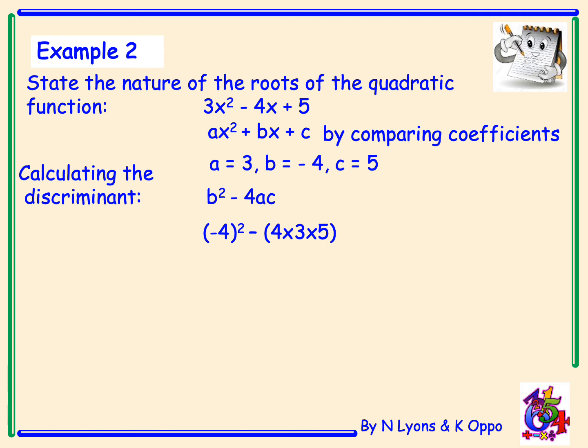Put your brackets in and write minus 4 squared, minus brackets 4 times 3 times 5. Doing the maths gives me 16 take away 60, which is less than zero. You don't always have to write the actual number — you can just tell from that it's going to be negative. So there are no real roots in this case. The discriminant is a negative number, and there are no real roots for this quadratic function.